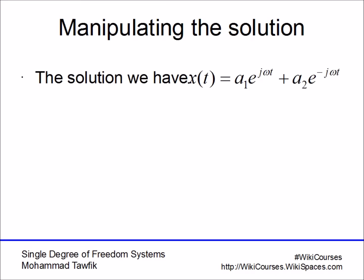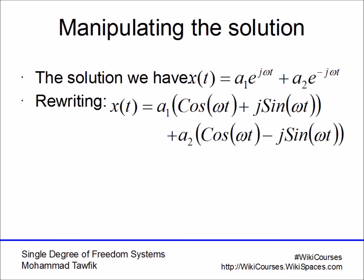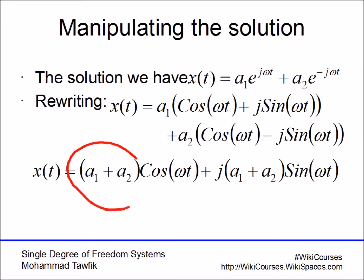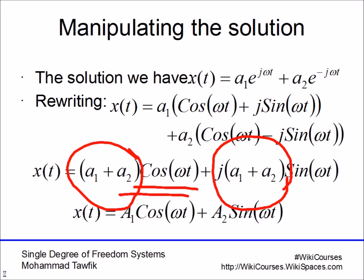You will find that the exponential solution we obtained can be rewritten in this form. Then rearranging the terms to get all the terms with the real part multiplied by cosine and imaginary part multiplied by the sine and give each of them another name.